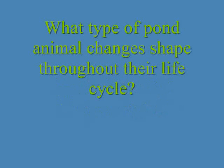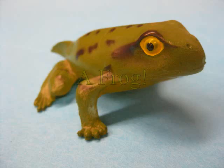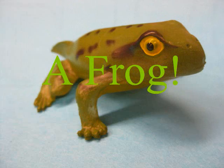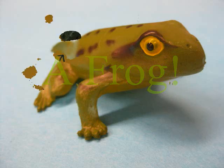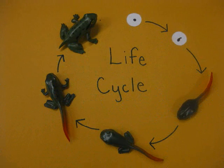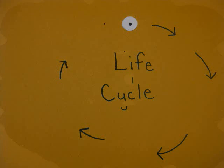What type of pond animal changes shape throughout their life cycle? A frog! The change of shape during an animal's life is called metamorphosis. The life cycle of a frog has six stages.